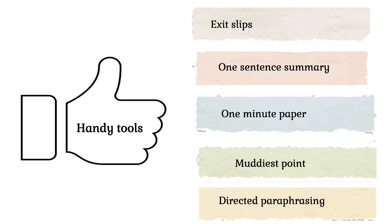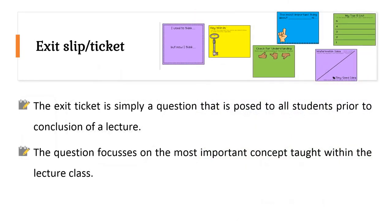Handy tools include: exit slips, one sentence summary, one minute paper, modest point, and directed paraphrasing. Number one: exit slip or ticket. The exit slip is simply a question posed to all students prior to the conclusion of a lecture. The question focuses on the most important concept taught within the lecture class.